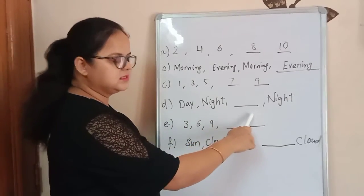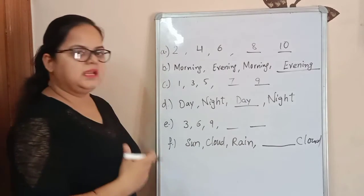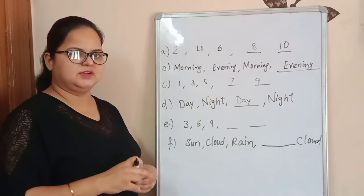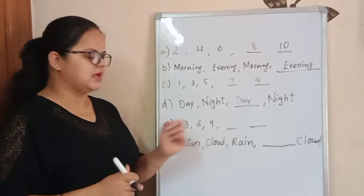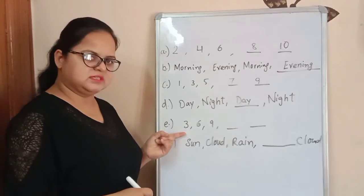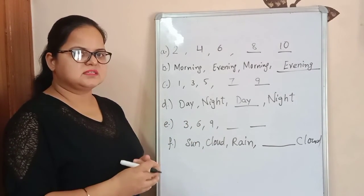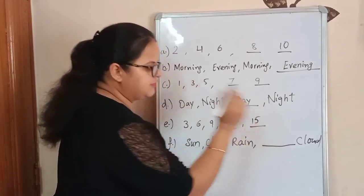Day, night. Very good. Day. Day, night, day, night. Very well done. Can you all understand now? Okay. Three, six, nine. This is the table of three. Three ones are three. Three twos are six. Three threes are nine. What comes next? Three fours are twelve. And three fives are fifteen.